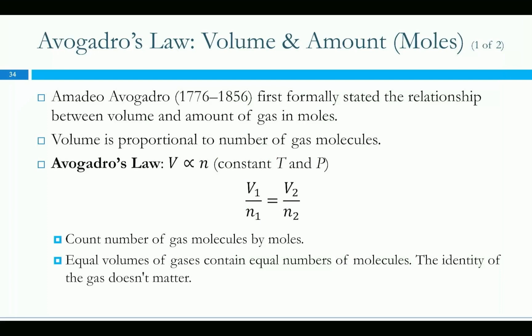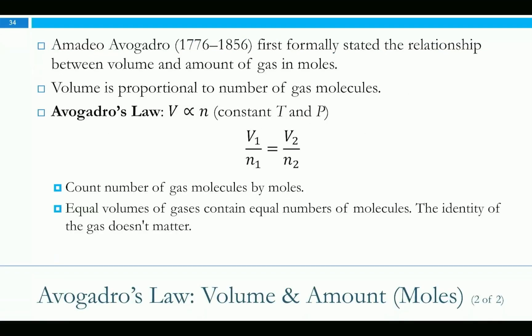This one's named after Amadeo Avogadro. As a sidebar, Avogadro's number — he did not come up with the so-called Avogadro's number, the mole, 6.022 times 10 to the 23. It was named after him in honor of him, partly for this gas law. Because it's one way they figured out the number of particles in a mole. Volume is proportional to the number of gas molecules. Add more gas — for pressure and temperature to remain constant, the volume has to increase. Take gas particles out, the volume has to decrease. These are directly proportional, and the identity of the gas doesn't matter — all gases can act as ideal gases. This could be moles of nitrogen, oxygen, fluorine, or xenon — any gas. The effect is the same.